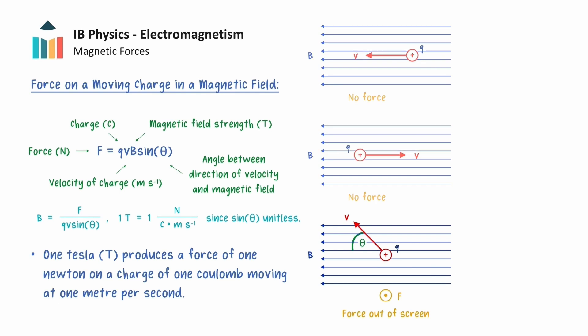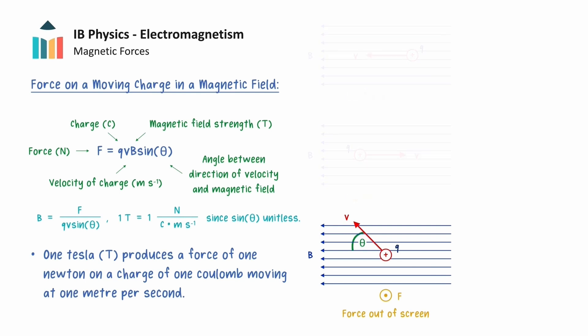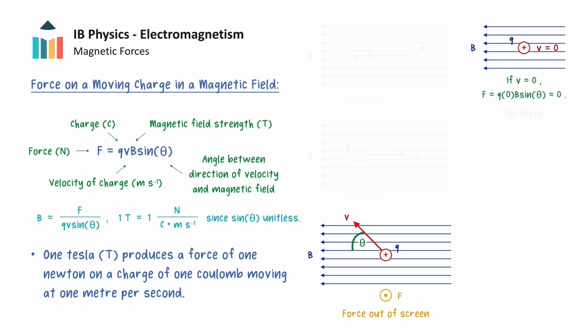From the expression for the magnetic force, we can deduce that a charge that is stationary in a magnetic field will not experience a magnetic force. Notice how this is different from the electric force on a charge, which is always non-zero even if the charge is stationary.